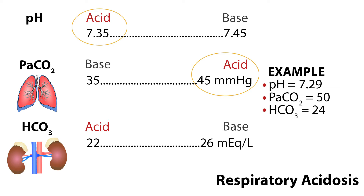Let's go over a few examples. If the pH is 7.29, it's less than 7.35, so it is acidic. The PaCO2 is 50, greater than 45, so it is acidic. The HCO3 is 24, which is normal. Since the pH is acidotic and the CO2 is acidotic, we know the acid-base disturbance is being caused by the respiratory system, and is called respiratory acidosis. Since PaCO2 is high and represents lung function, it tells us there is excess CO2 retention from hypoventilation or CNS depression.